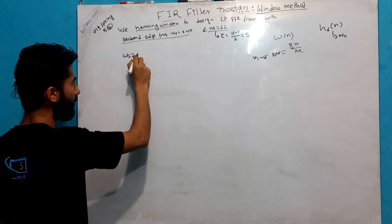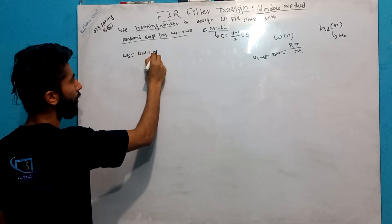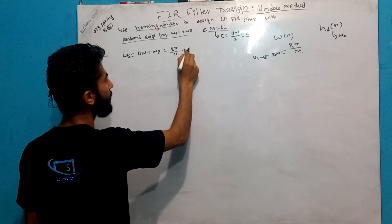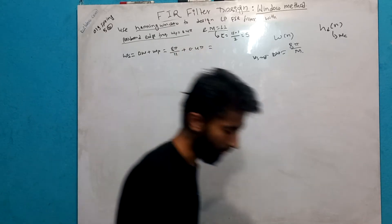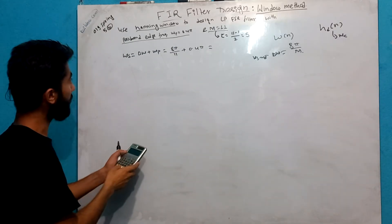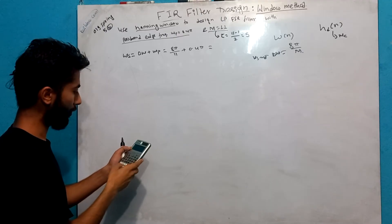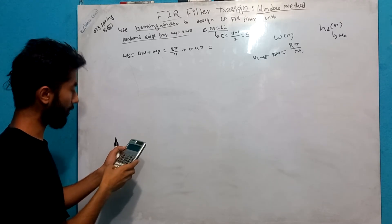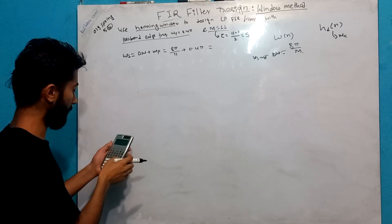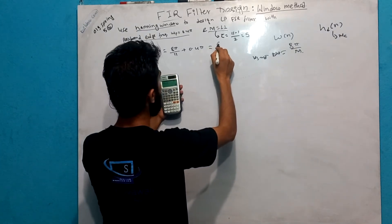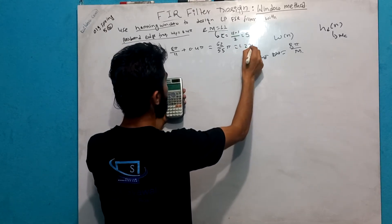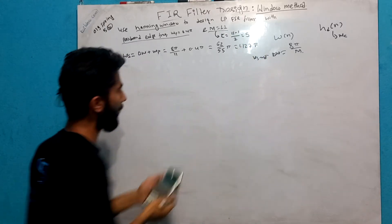Ws equals delta W plus wp, which is equal to delta W — that means 8π/11 — plus 0.4π. Let me calculate this: 8/11 plus 0.4, which comes to 62/55 π, which is equal to 1.127π.